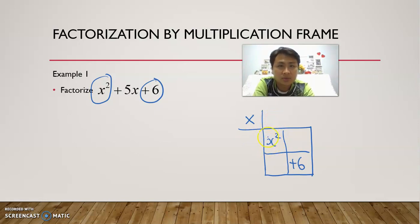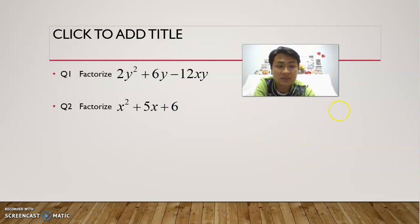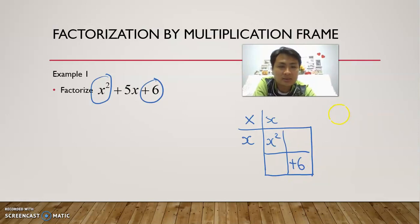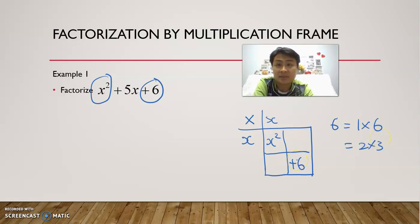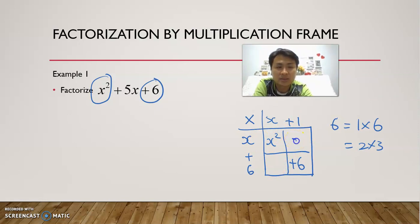We'll put x² in the first box and +6 in the last box. Now we decide what multiplied by what gives us x², so an obvious choice is x times x. Then for the 6, we look at different factors: 6 equals 1 times 6, or 2 times 3. If we don't know the answer, we'll try two numbers. Let's try positive 1 and positive 6. So 1 times x gives us x, and 6 times x gives us 6x.